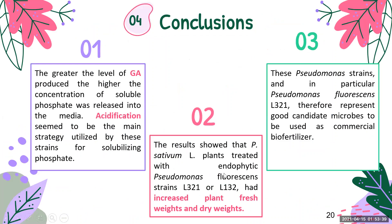Finally, in conclusion, the research highlights the following outcomes: higher the concentration of gluconic acid, higher will be the concentration of soluble phosphorus. Therefore, acidification seems to be the main strategy utilized by these strains for solubilizing phosphate. Plants treated with endophytic Pseudomonas fluorescens strains showed increased plant dry weight and fresh weight. Therefore, the hypothesis is confirmed, and these strains represent good candidate microbes which can be used as commercial biofertilizers, thus alleviating the burden of the phosphorus crisis.